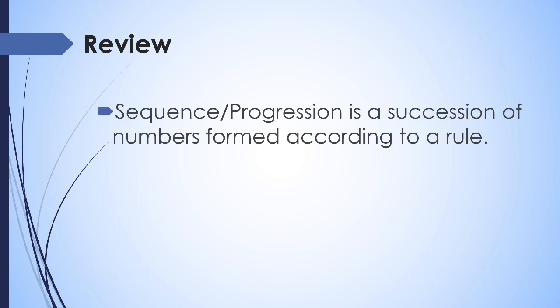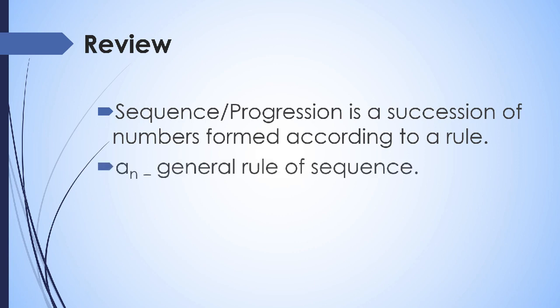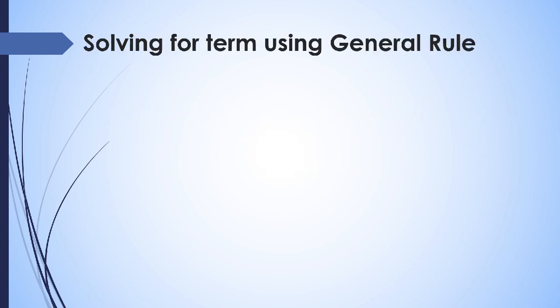Let's have a review of the definition of sequence: a sequence or progression is a succession of numbers formed according to a rule. Remember that a sub n is used to denote the general rule of a sequence. By definition, every sequence should have a general rule denoted by a sub n.